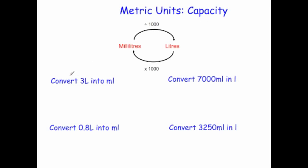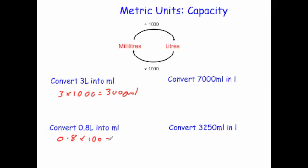Let's look at some examples. Convert 3 liters into milliliters: to go from liters to milliliters you multiply by 1000, so 3 times 1000 equals 3000 milliliters. Next, convert 0.8 liters into milliliters: 0.8 times 1000 — move the decimal place three times — gives 800 milliliters.